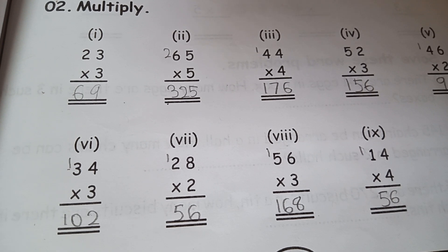52 times 5. 5 times 2 is 10, and 1 goes over here. 5 times 5 is 25, 25 plus 1 is 26, so the answer will be 260.